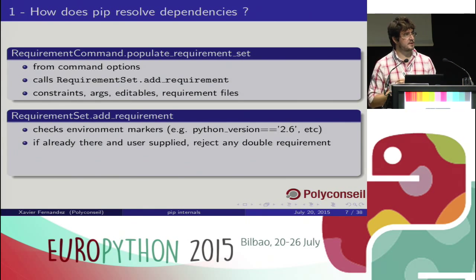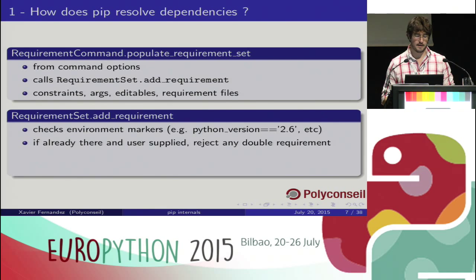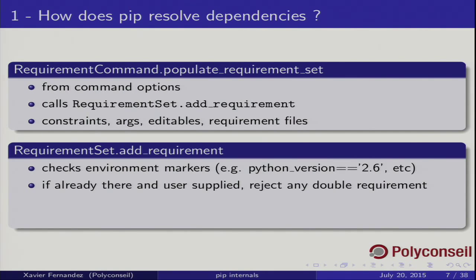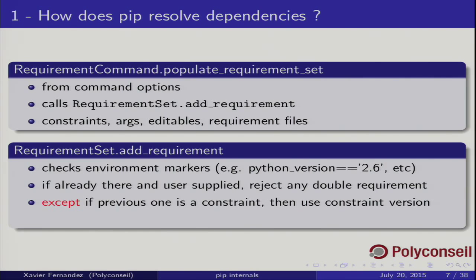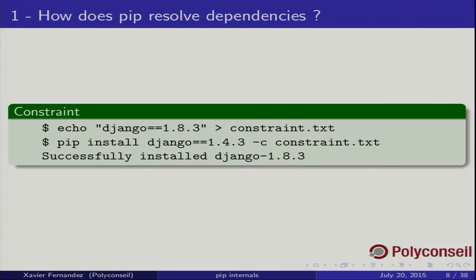After checking markers, add_requirement will check if the same requirement was already supplied and reject any duplicate requirements. So you can't ask for Django version 1 and then also ask for Django greater than or equal to 1 — it will reject it, except if the previous requirement was a constraint, in which case it will always use the constraint version. For example, if you put Django 1.8.3 in a constraint file and then ask pip to install 1.4.3, it will use the version specified in the constraint file. This is useful to force pip to install a custom or local version with small patches, whatever other packages ask for.